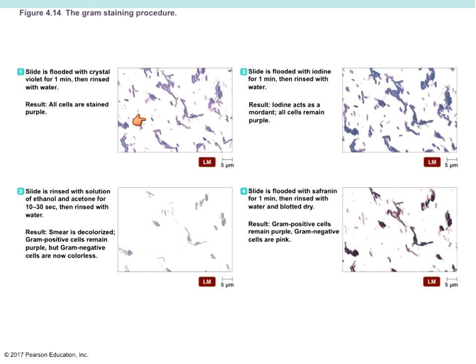The next step is to use iodine — flooding the slide with iodine acts as what we call a mordant. It helps make sure that the crystal violet stays fixed onto the cells. Gram-positives only have that thick cell wall. Gram-negatives have that extra LPS layer surrounding them, so the crystal violet and iodine attach to that outer surface. After this point, if we were to stop, everything would still be purple.